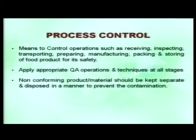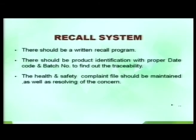Process controls include that at the receiving, inspection, transportation, preparation, and manufacturing stages, food safety needs to be appropriately maintained and all techniques followed. Non-conforming products should be handled in a separate way. The last prerequisite is the recall system — we need appropriate traceability in our system by adding code numbers and batch numbers so that in case of non-conformance, a complaint, or a failure, we can recall our product.